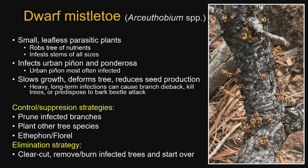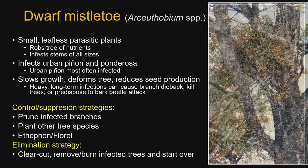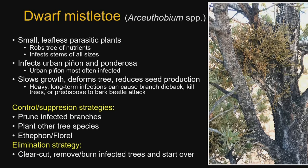Elimination strategy: the Mescalero Apache tribe had dwarf mistletoe in their ponderosa pine — they clear-cut whole stands and replanted, eliminating the mistletoe entirely. That's an extreme approach. You could clear-cut all your pinion and plant new pinion, but it's really hard to plant trees now. As the saying goes, the best time to plant a tree was 30 years ago. Really, the only way to control dwarf mistletoe is to cut the trees down and start over. In heavily infested trees it's often in the main bole, so pruning may not be practical — you'd be cutting the tree in half.